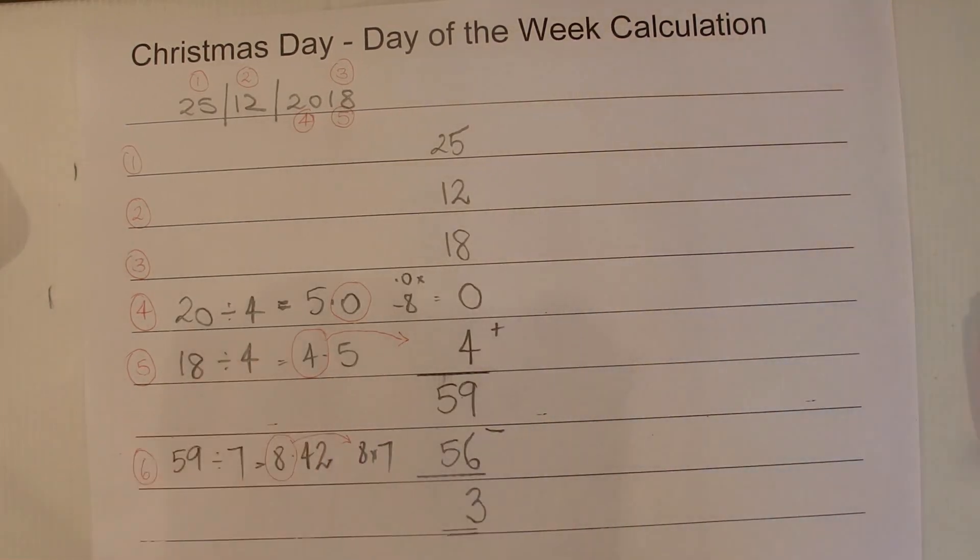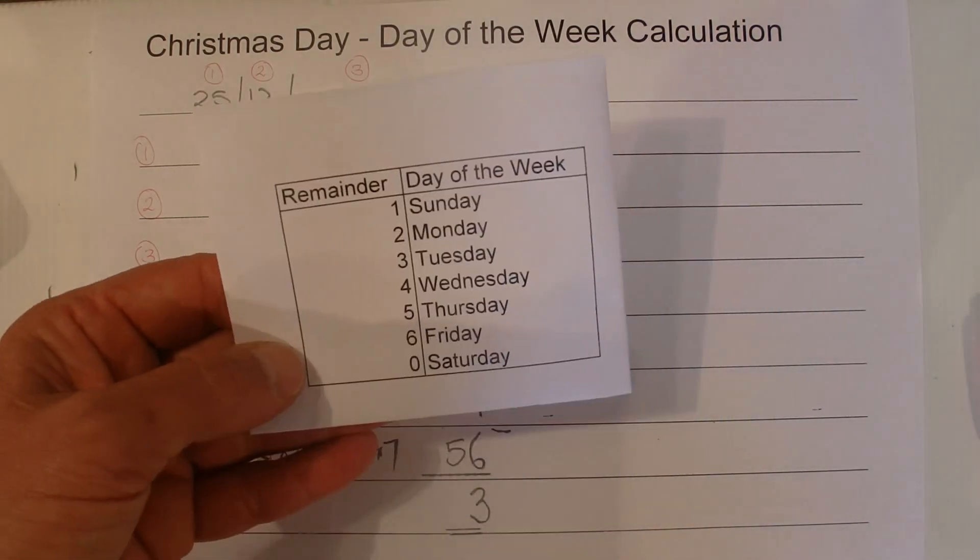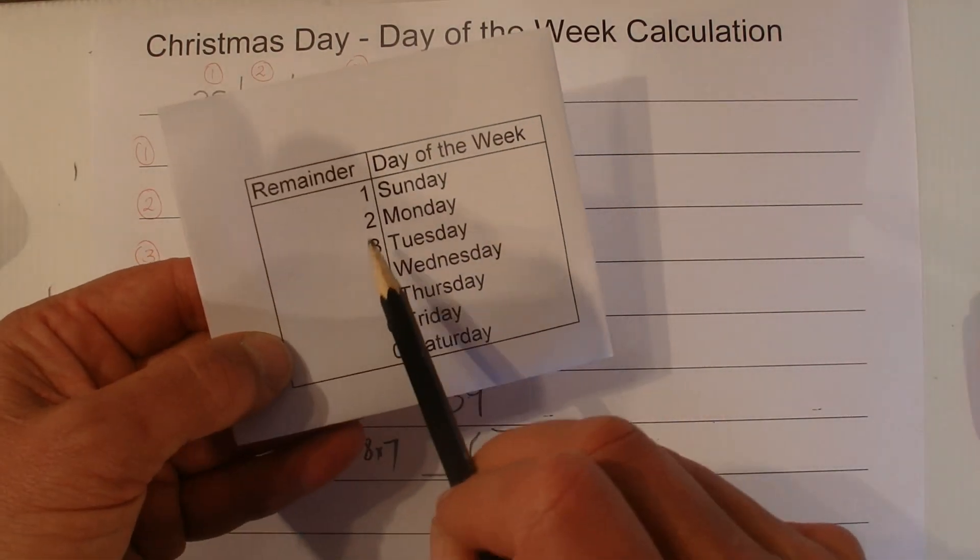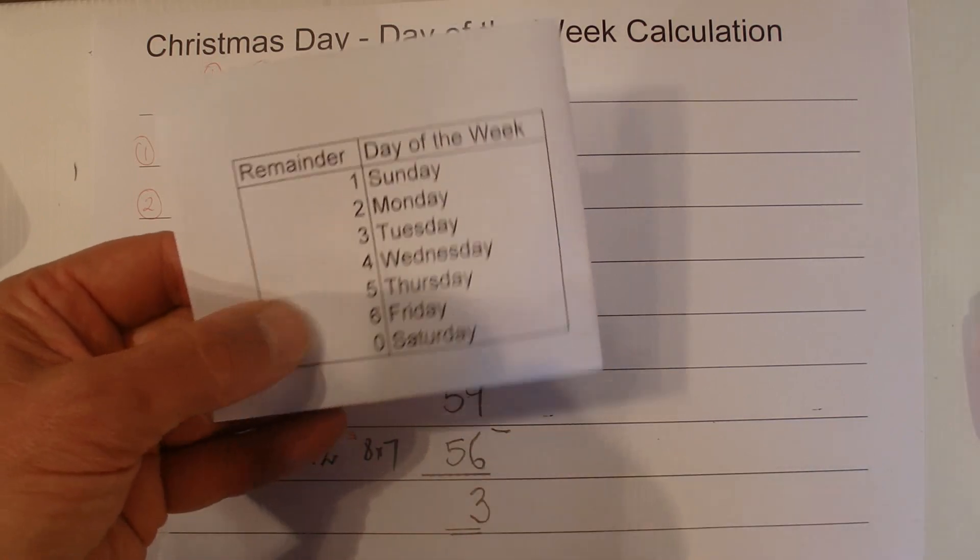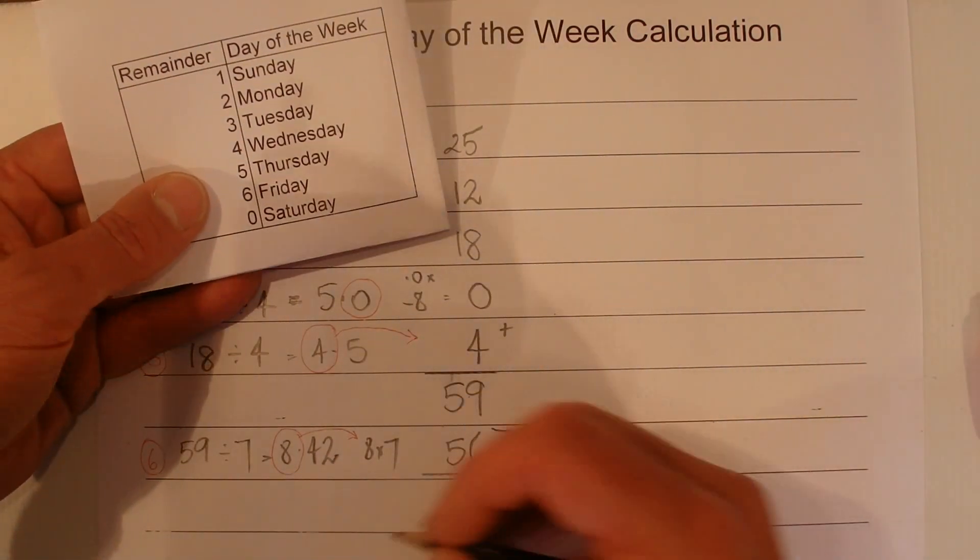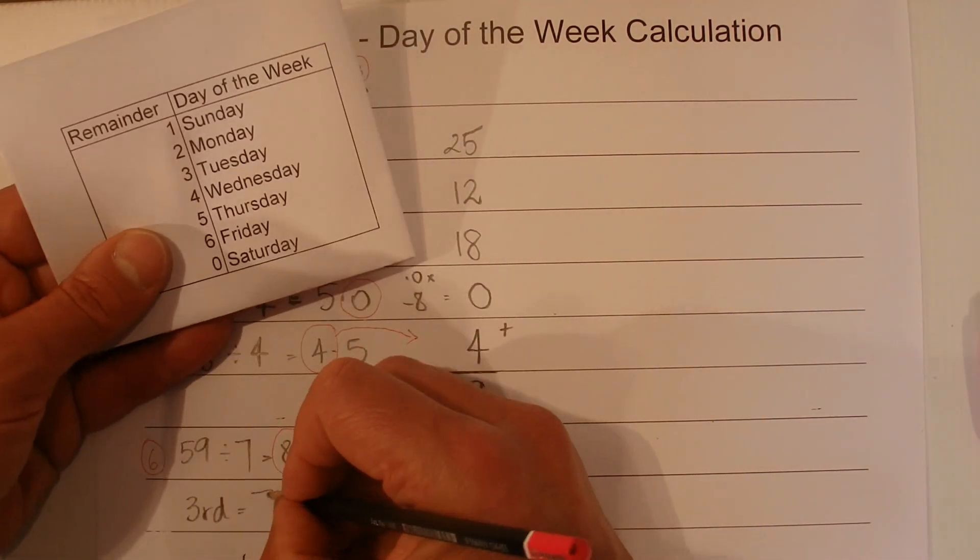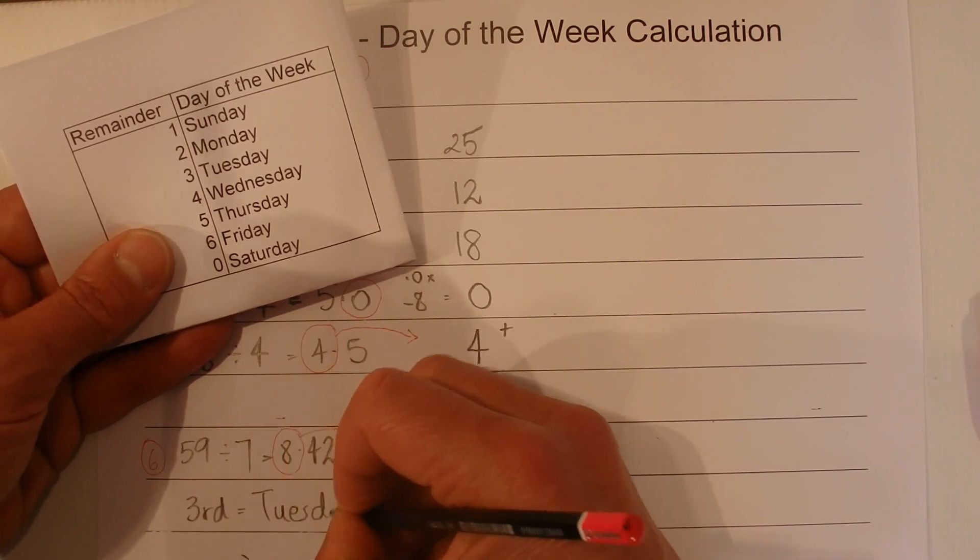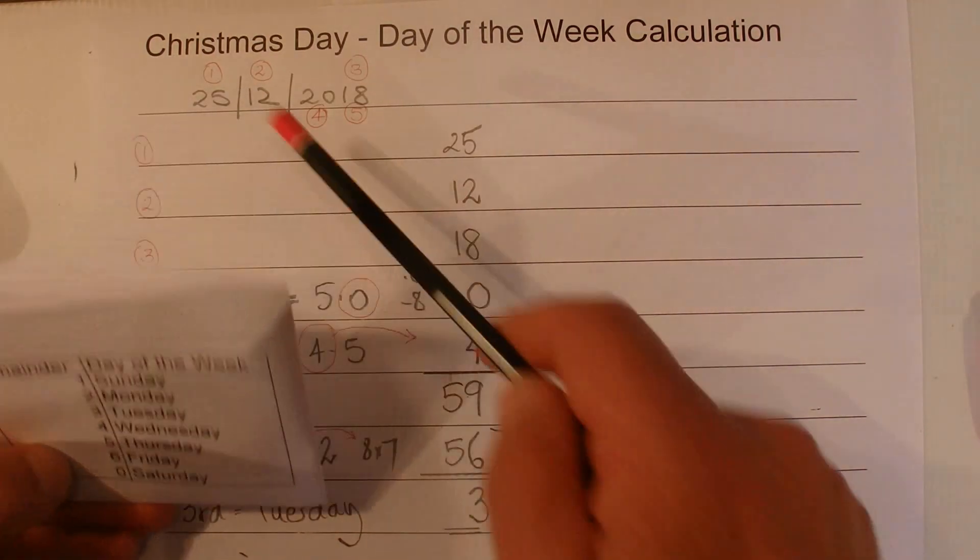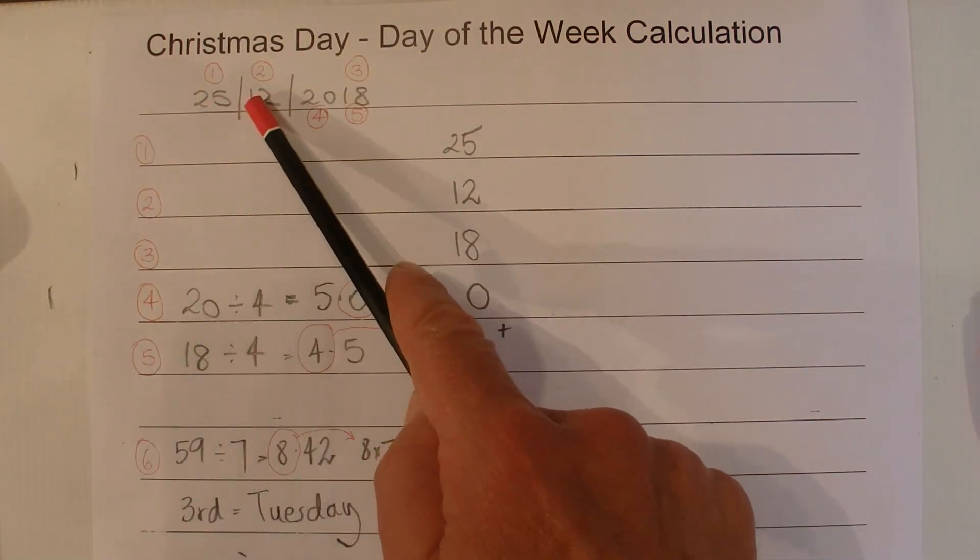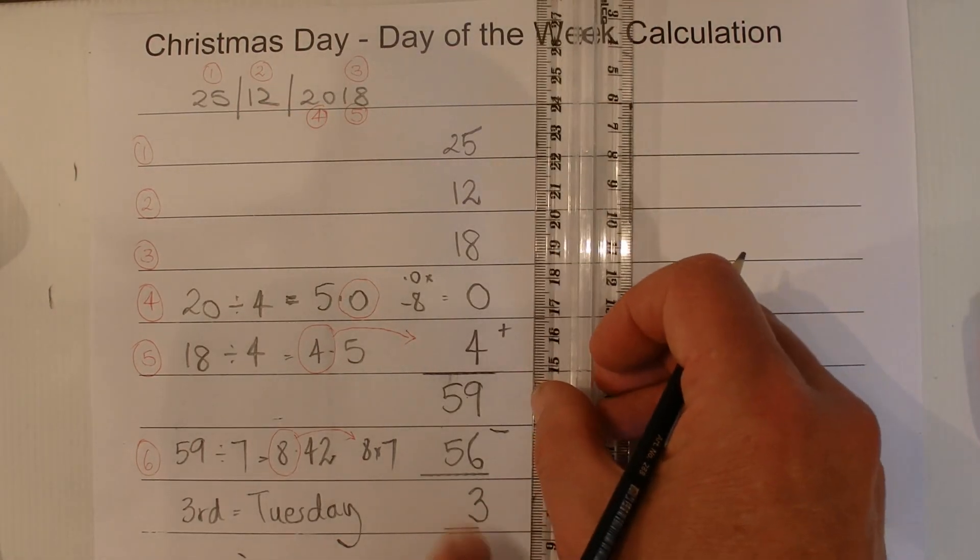So, and then once we know the answer is 3, that's our final answer, we look at this simple table. And if the answer is 1, it would be a Sunday. 2, it would be a Monday. 3, it would be a Tuesday. So there we go, third day of the week is a Tuesday. So, yeah, so there we go. So Tuesday, so the 25th of December 2018 is going to fall on a Tuesday.